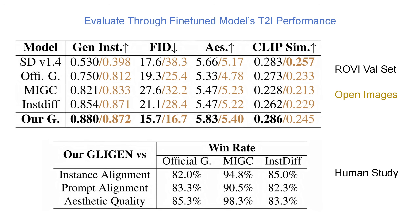Beyond qualitative examples, we conducted quantitative evaluation to validate RoVe's effectiveness. For in-domain evaluation on RoVe's validation set, our model outperforms all baselines across instance grounding accuracy, prompt fidelity, and aesthetic quality metrics. For out-of-domain evaluation on the Open Images validation set, we maintain strong performance, demonstrating excellent generalization capabilities. Our human evaluation with expert evaluators confirms these findings — users consistently preferred our results across all aspects, with win rates exceeding 80% against alternatives.